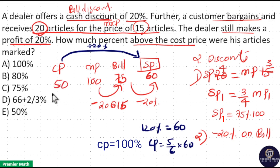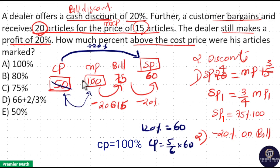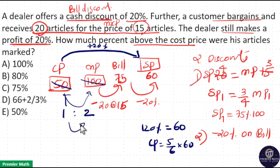The marked price is 100 rupees and cost price is 50 rupees. The ratio is 1 to 2 — if cost price is 1 rupee, marked price is 2 rupees. That means the article is marked 100 percentage above the cost price. So the answer is option 1: marked price is 100 percentage above the cost price.